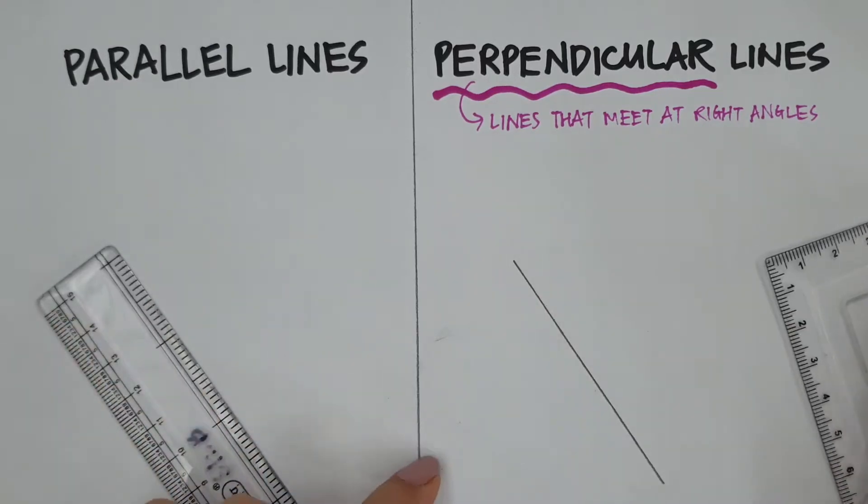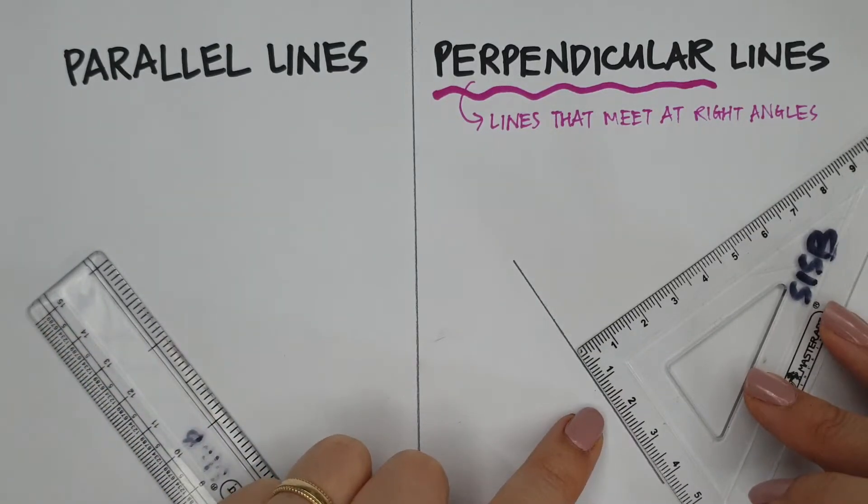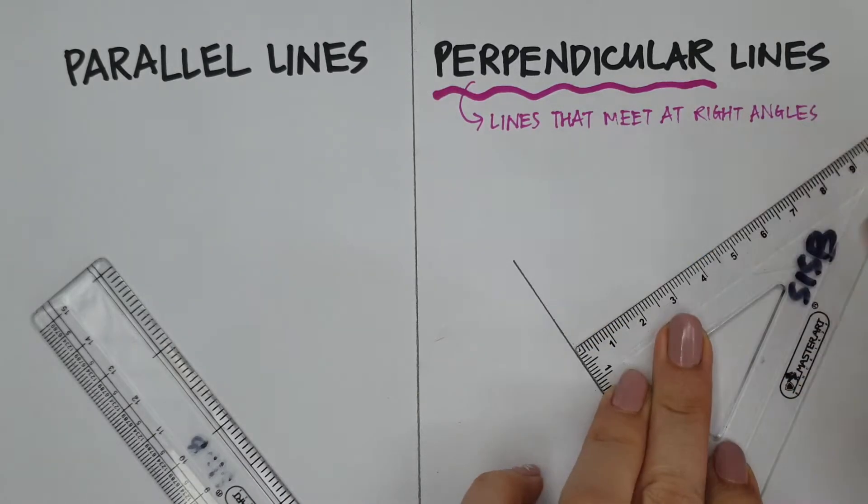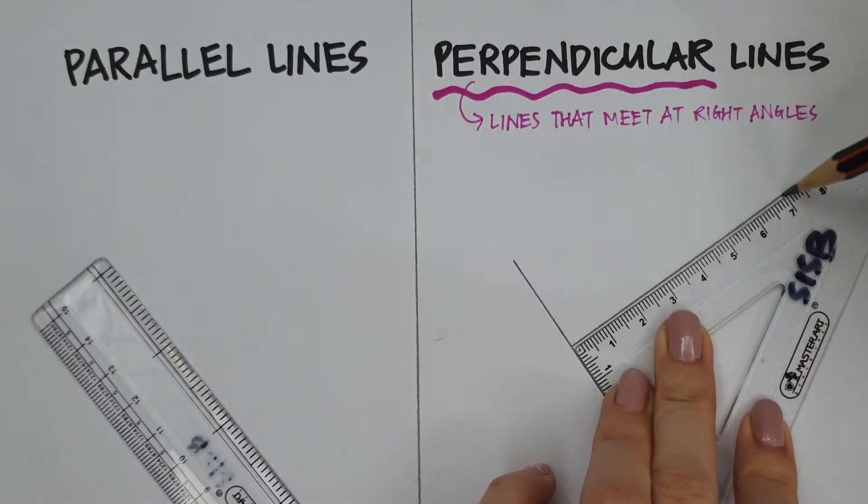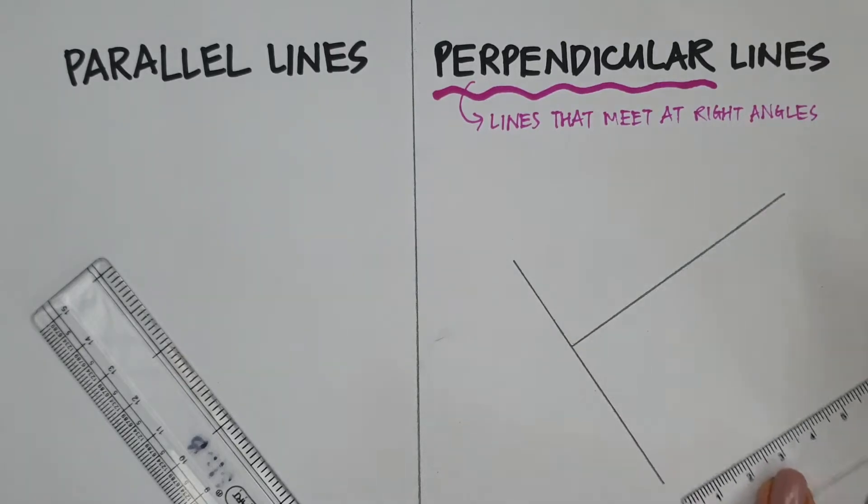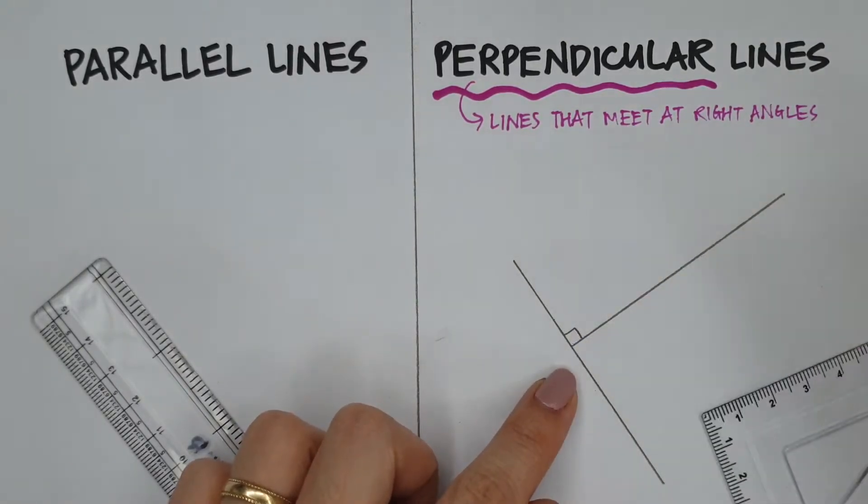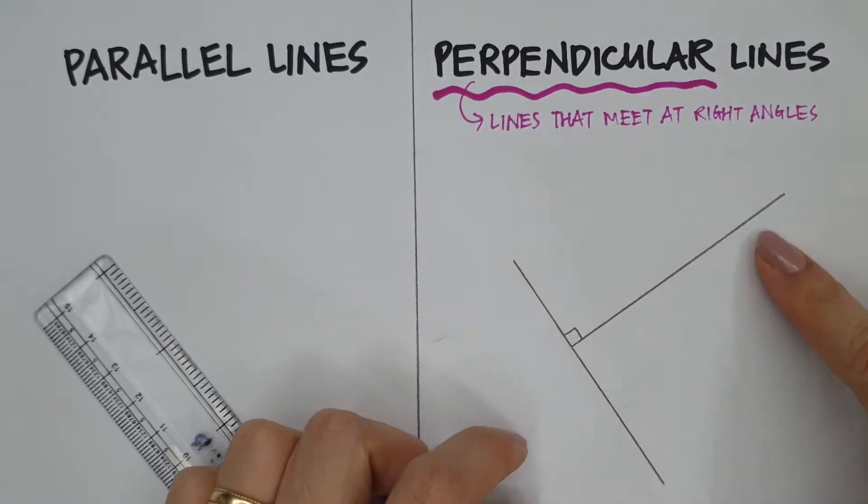But if you can just see it with your eyes, you can just put it straight on the line, hold it down, and make sure you hold the ruler down because you don't want the ruler to shift as you draw. Now, these two lines meet at a point which is a right angle, so these two lines are perpendicular.